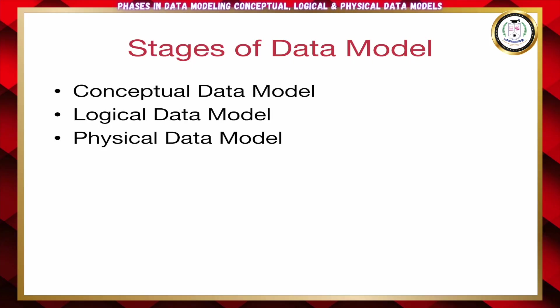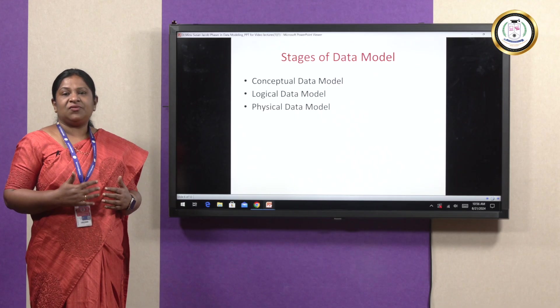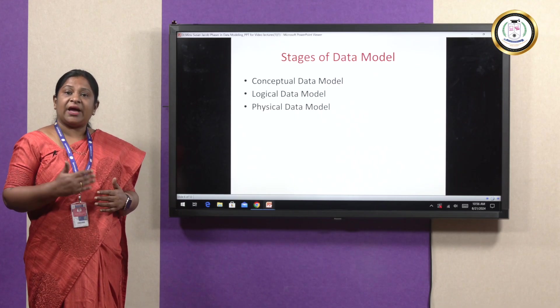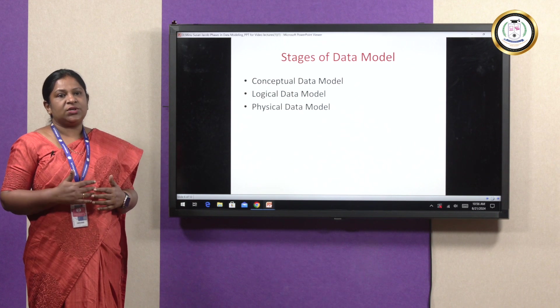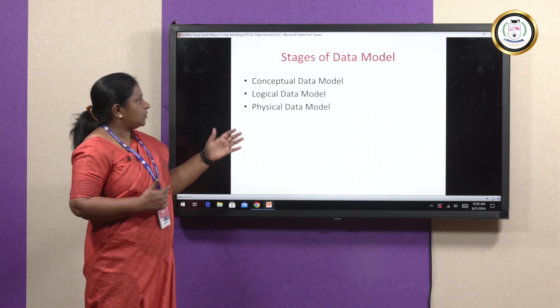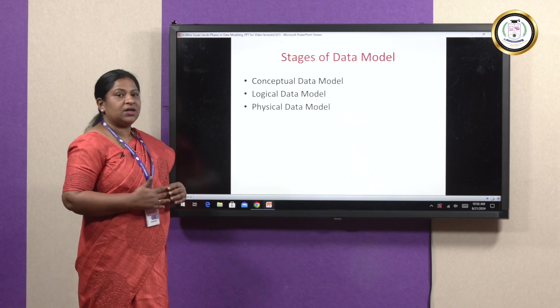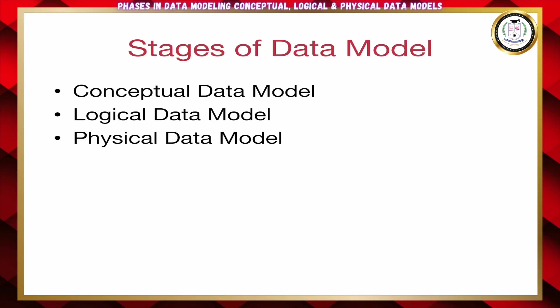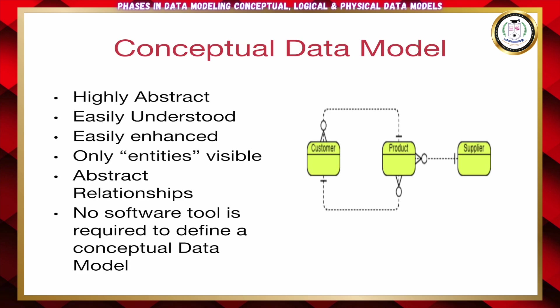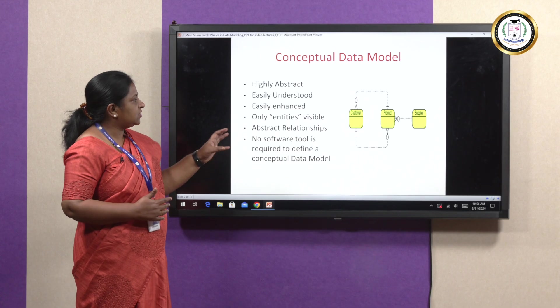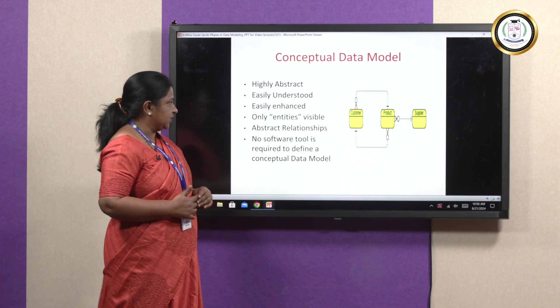Various phases or stages in data modeling. In order to develop a data model, we basically have three stages, or otherwise it is an iterative process in which it has to go through three stages. The first stage is conceptual data model, the second stage is logical data model, and the third one is physical data model.